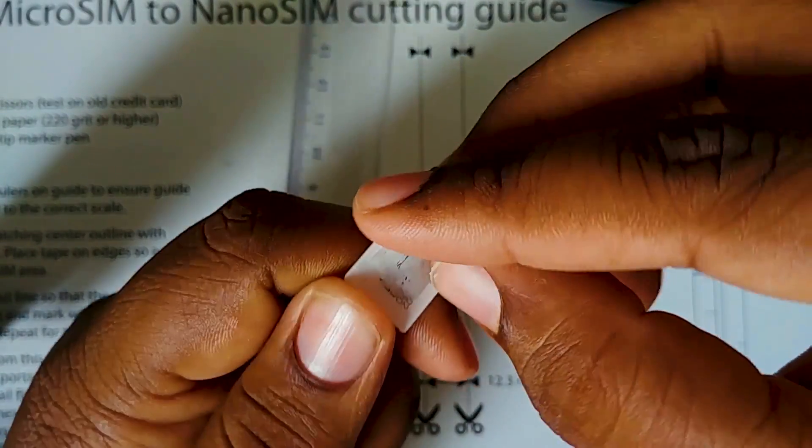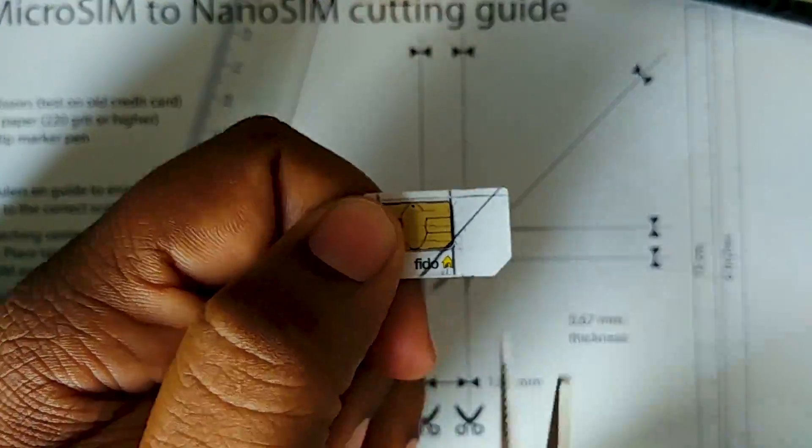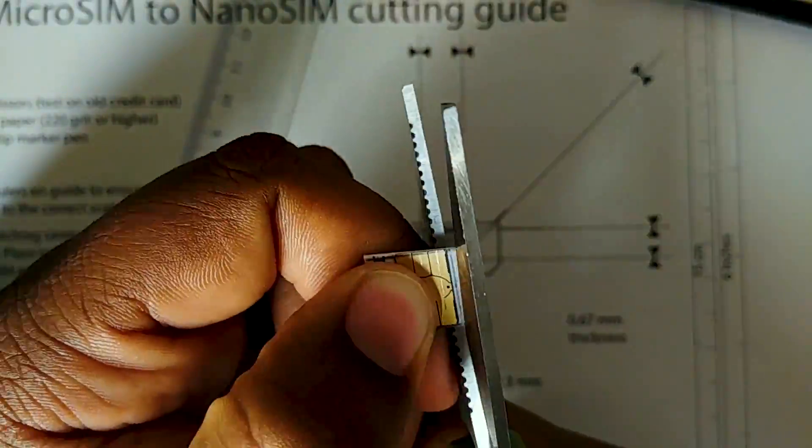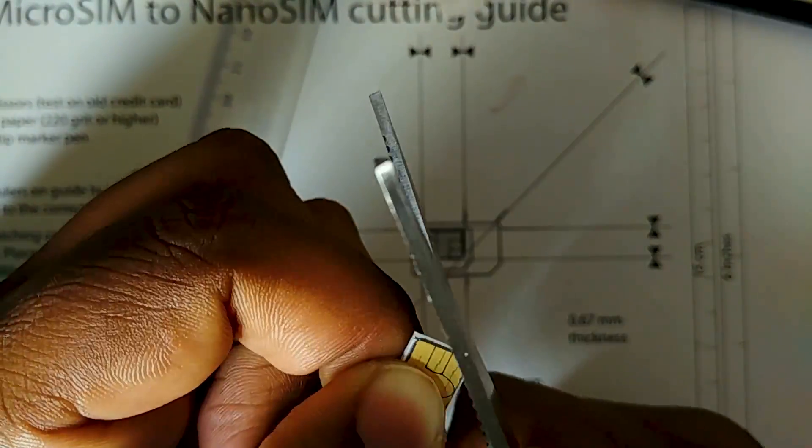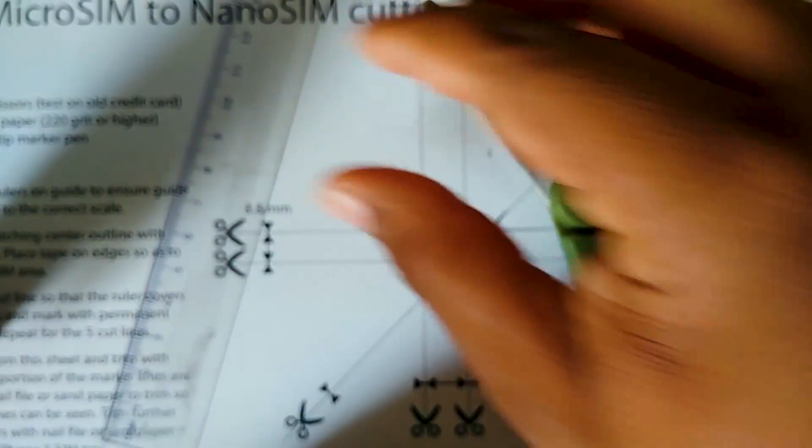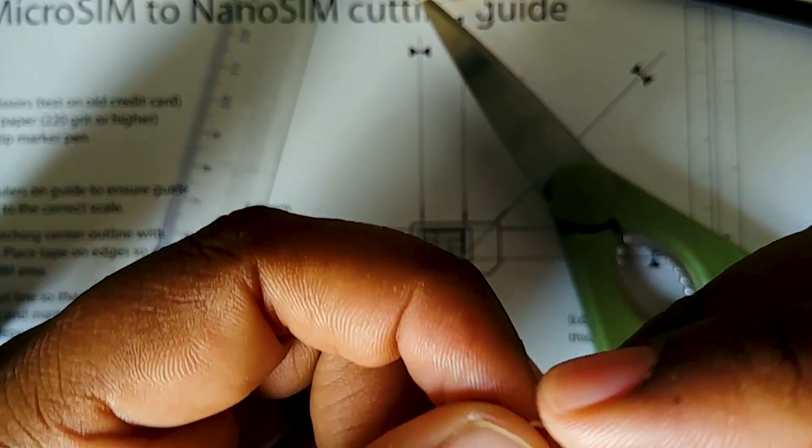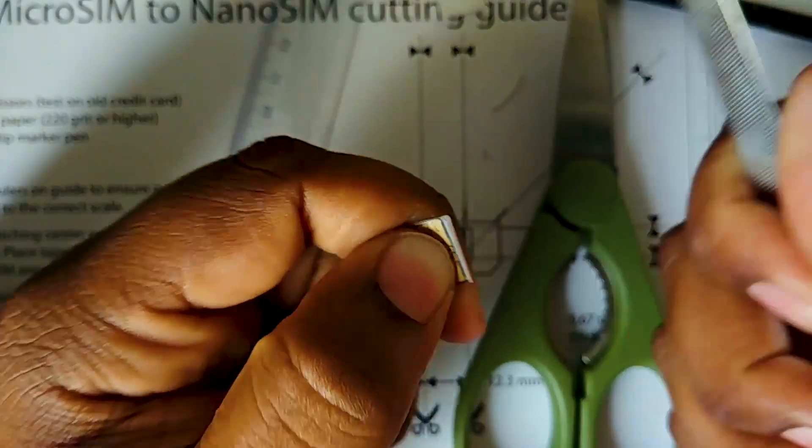Now let's remove the tape and let's cut it. So now we have our nano SIM all cut, and what we're gonna do is file down the edges, make it smooth. I'll be right back.